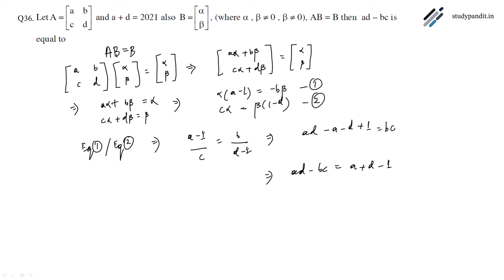Since A plus D equals 2021, we substitute to get AD minus BC equals 2021 minus 1, which equals 2020. So the value of AD minus BC is 2020.